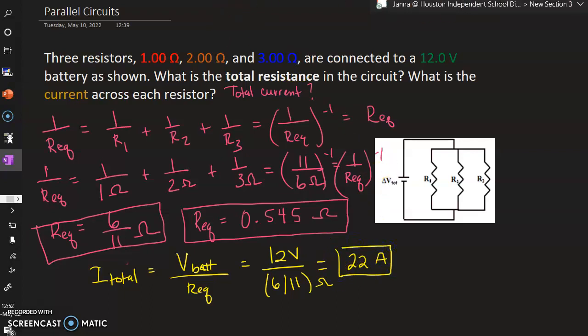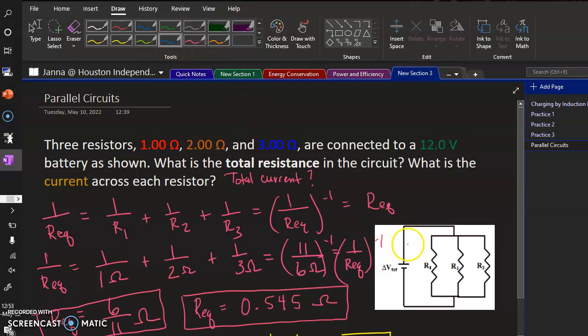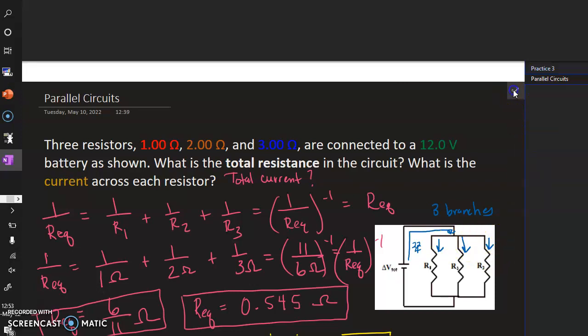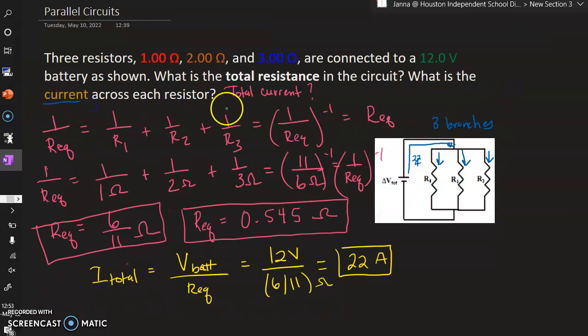So 22 amps flows out of the positive terminal of the battery, and then it gets to one of these three branches in the circuit. So 22 amps of current. Part of the current can flow down R1. Part of the current splits off and flows down the branch with R2, and the other part of the current flows down the branch with R3. So what we'll do now is we will calculate the current flowing through each resistor in this circuit.